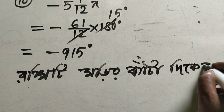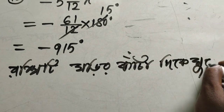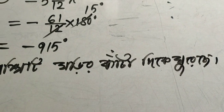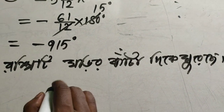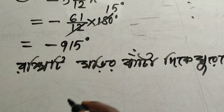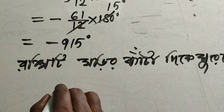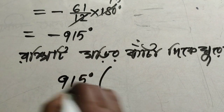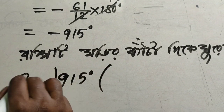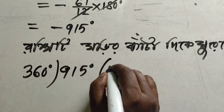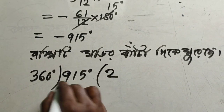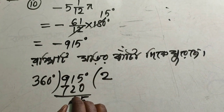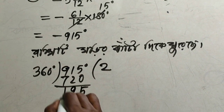This is the degree you have to give a minus. This is the degree that you have to give a minus. If you have the degree that you have to give a minus, how much degree you have to give a minus?